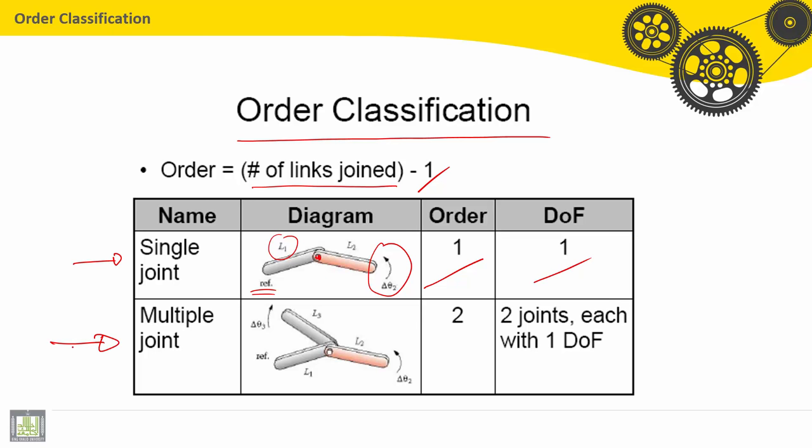For a multiple join, here we have link 1, link 2, and link 3. The first link is the ground. It is the reference. So the second and the third link can make, according to the join, delta theta 2, angle motion for second link, and theta 3, rotational motion for the link number 3. So the order is 2. It is a second order joint. So we have 2 joints, each with 1 degree of freedom.